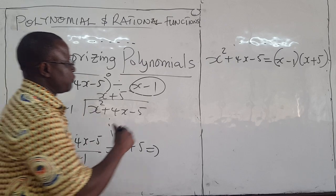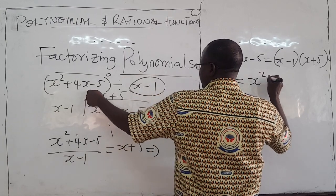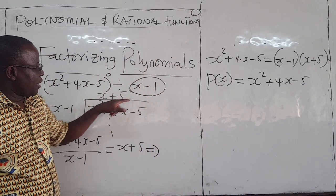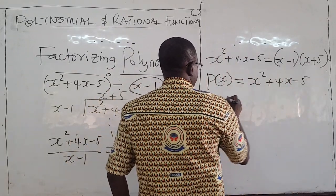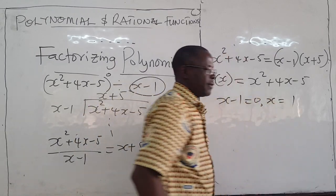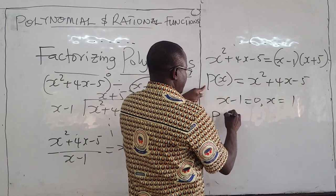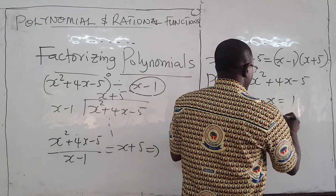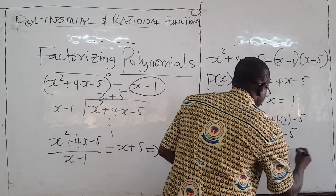Notice something. Suppose our polynomial expression, let me call it p(x), is given by x squared plus 4x minus 5. We are dividing by x minus 1. Notice that because x minus 1 is a factor, if I equate it to zero, I get x equals 1.